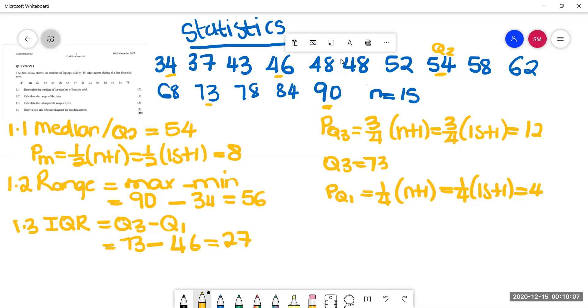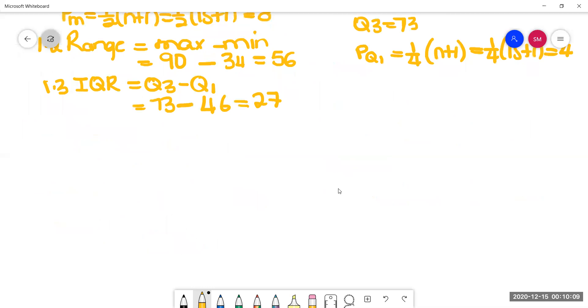So what we need to do now is to summarize this information. So we have min equals 34, Q1 equals 46, Q2 equals 54, Q3 equals 73, and our max equals 90.